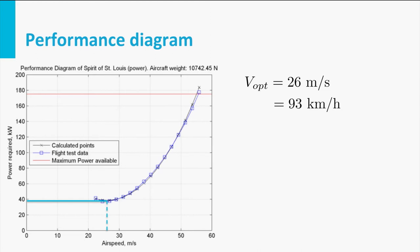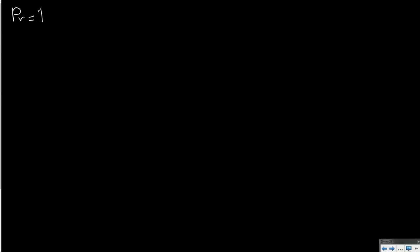This speed is slightly lower than the speed required for optimal range. It is also possible to calculate the speed directly. Power required is by definition the aerodynamic drag multiplied with the speed. For minimum power required, the product of drag and airspeed should be minimum. In horizontal flight at constant speed, lift equals weight, so we can rewrite drag as CD divided by CL times the weight.